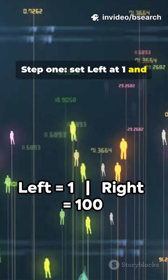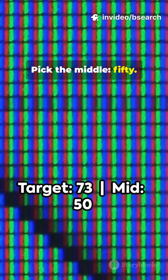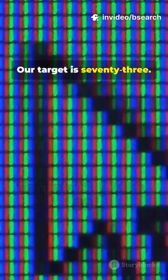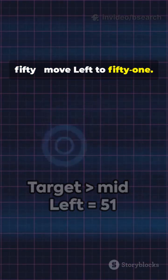Step 1: set left at 1 and right at 100. Pick the middle, 50. Our target is 73. 73 is greater than 50, move left to 51.